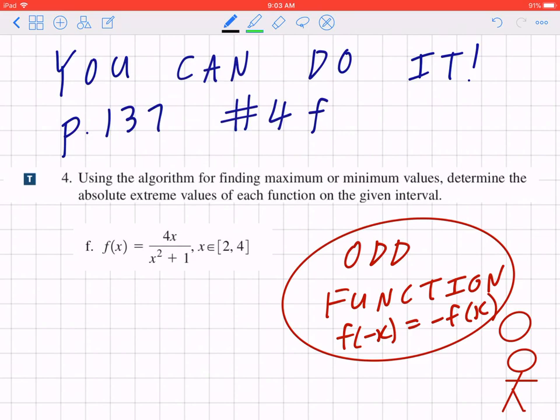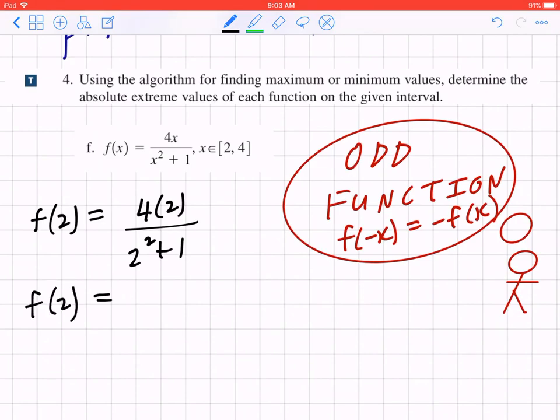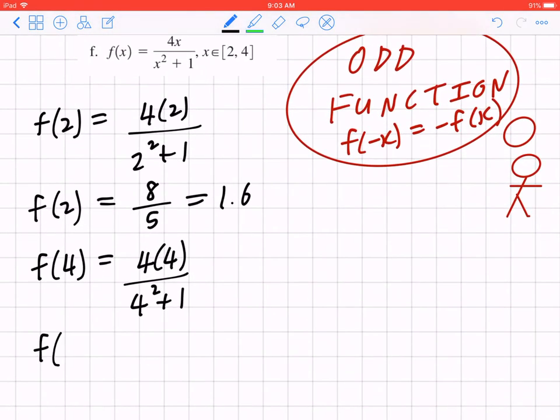Now step 1, find the endpoints. On the left hand side, x is going to be 2. If you plug in 2, that's going to give you 4 times 2 divided by 2 squared plus 1. When you work this out, this equals 8 divided by 5, or 1.6. Likewise, if you look at the other endpoint, f of 4, that's going to be 4 times 4 divided by 4 squared plus 1. When you work this out, this will give you 16 divided by 17, or approximately 0.9.